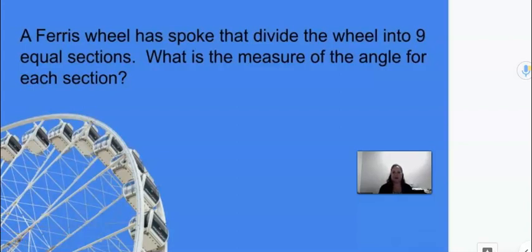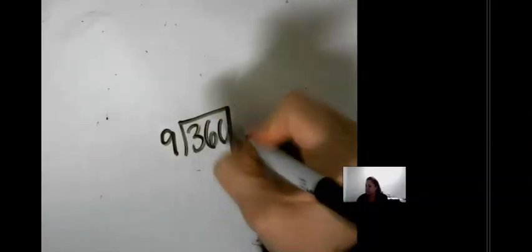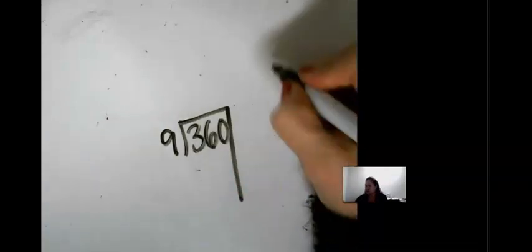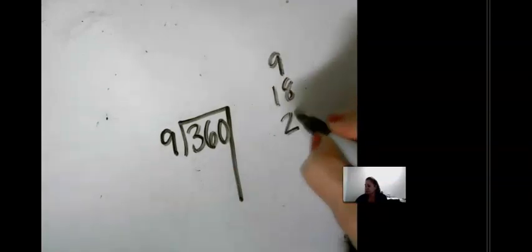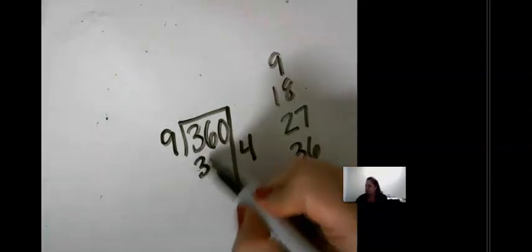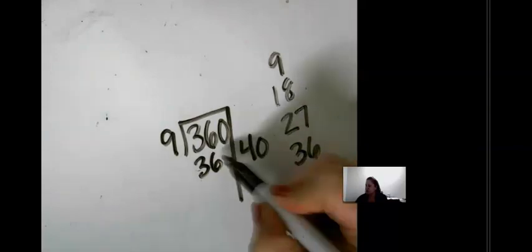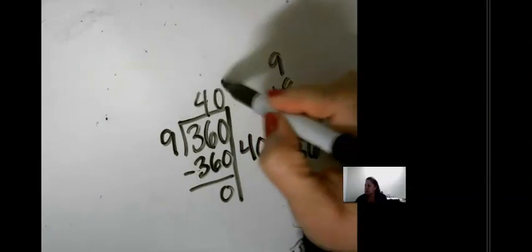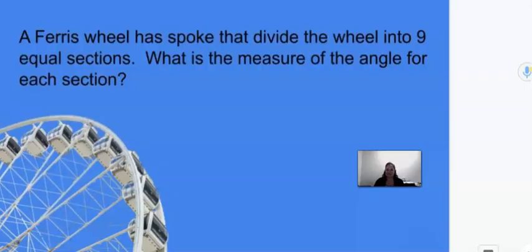So 360 divided by nine. Well, how many times does nine go into 36? Right, exactly four times. If four times nine is 36, then four times 40 is 360. And we're finished. So the measure for each section of the ferris wheel is 40 degrees.